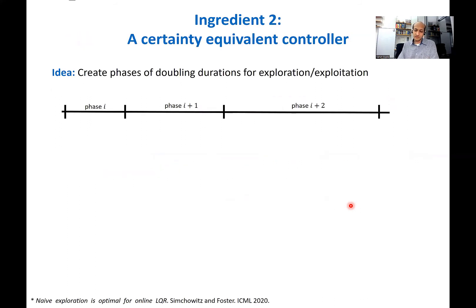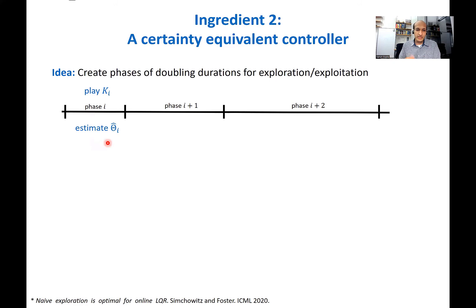The second ingredient from the theory of stationary LQR is exploration and exploitation using phases of geometrically increasing duration. A simple algorithm proposed by Simchowitz and Foster partitions the entire time horizon into phases of doubling length. In phase i, we play some linear feedback controller K_i. Based on observations during this phase, we estimate the underlying dynamics, calling it theta hat_i. In the next phase i+1, we play the optimal linear feedback controller based on our estimate from the previous phase, get a better estimate theta hat_{i+1}, and so on.